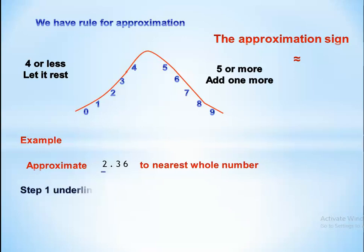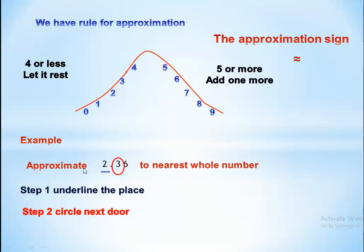The whole number here means the units place. First step: underline the units place. Then circle the next-door digit. Ask yourself: is it 4 or less, or 5 or more? The next-door digit is 3 — so it is 4 or less. Let the underlined number rest. So approximately 2.36 to the nearest whole number is 2.